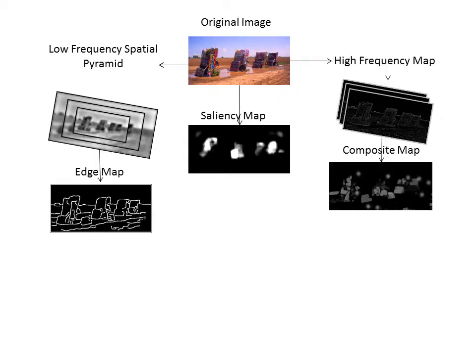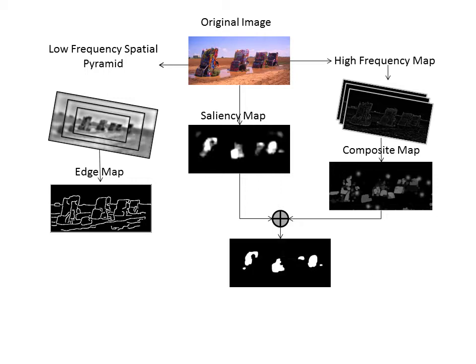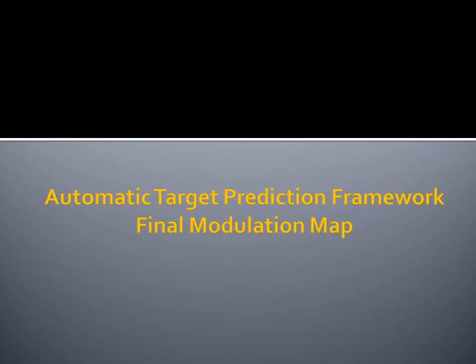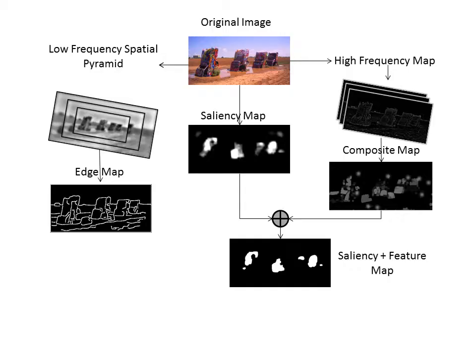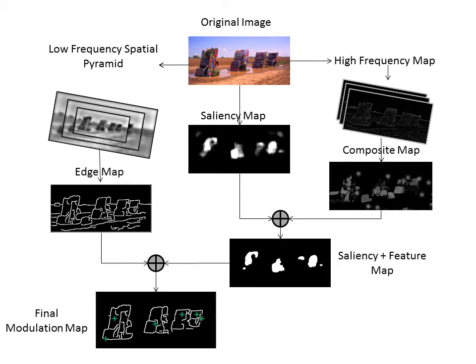We use a weighted combination of the saliency map and feature map to obtain a saliency plus feature map. Finally, we use the saliency plus feature map for target location prediction and obtain an edge connectivity map for modulating the shape of the object. Using the target location and edge connectivity map, we build the final modulation map for our automatic target prediction framework.